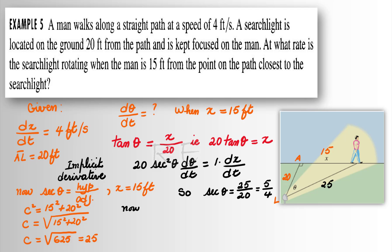20 sec²θ, and sec θ is equal to 5/4. 20 times (5/4)² times dθ/dt that we're looking for is equal to dx/dt, which is 4.